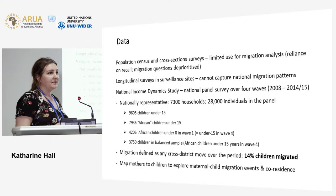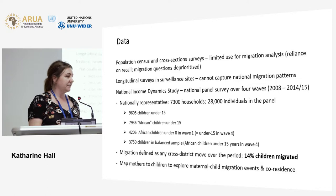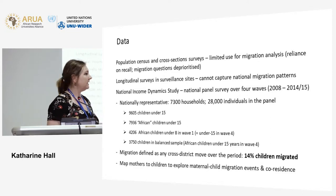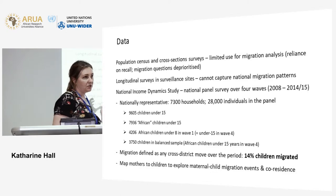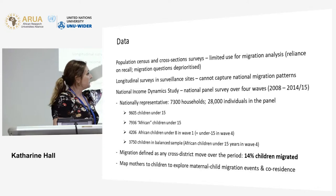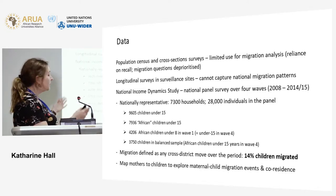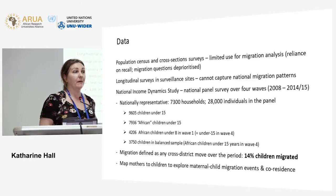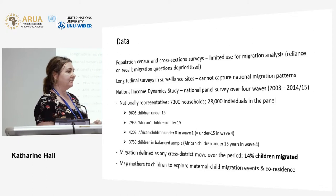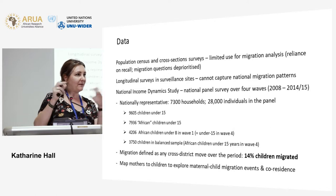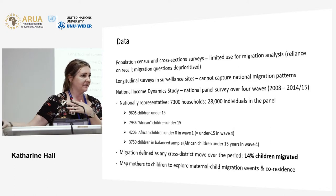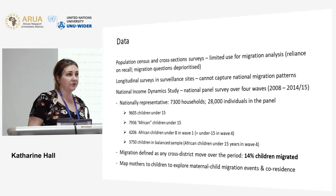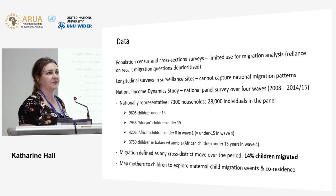Migration is defined as a physical move across districts — not relying on reported migration, but actually observing which district children live in and looking for changes. By that definition, 14% of this cohort of children had geographically migrated over the seven-year period. I also mapped mothers onto children to explore maternal and child migration events and co-residence. The migration rate for mothers of children was around 17%, excluding those absent in all waves. These are fairly high rates of geographic migration for both children and mothers over a relatively short period.